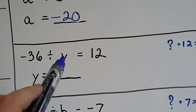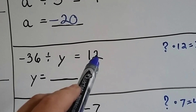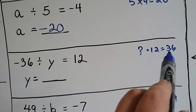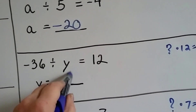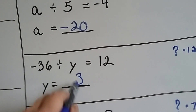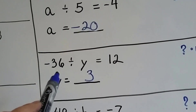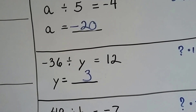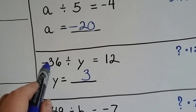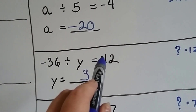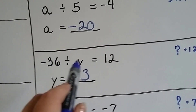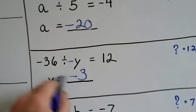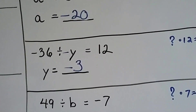Negative 36 divided by y equals 12. We ask ourselves, what times 12 equals 36? Well, 3. 3 times 12 is 36, but is it negative or positive? Our answer is positive 12, but the 36 is negative. To get a positive answer we need like signs, so y is going to have to be negative — negative 3.